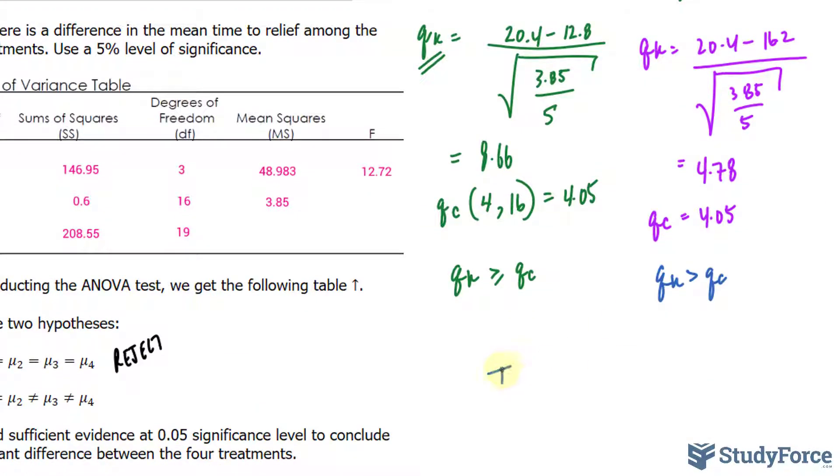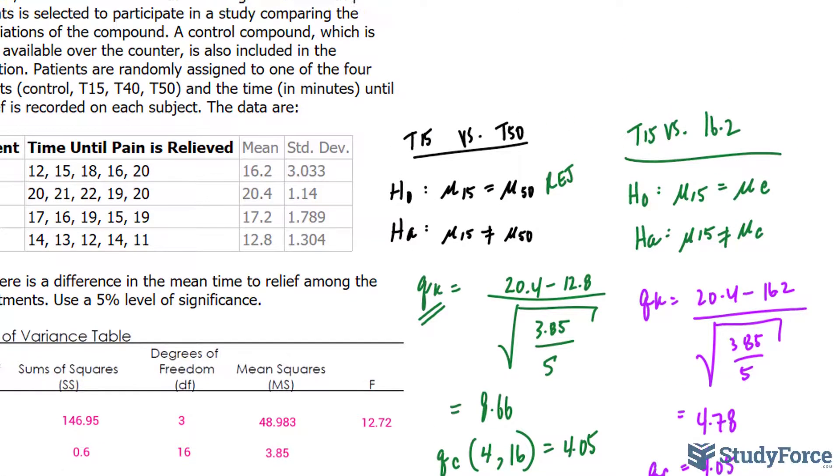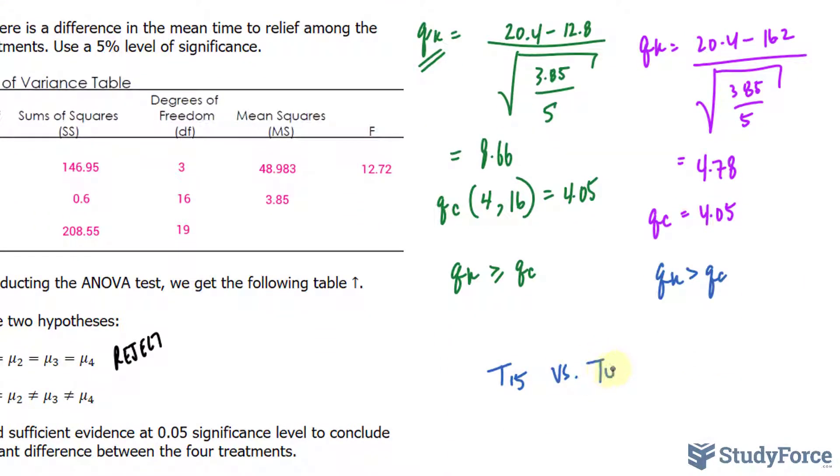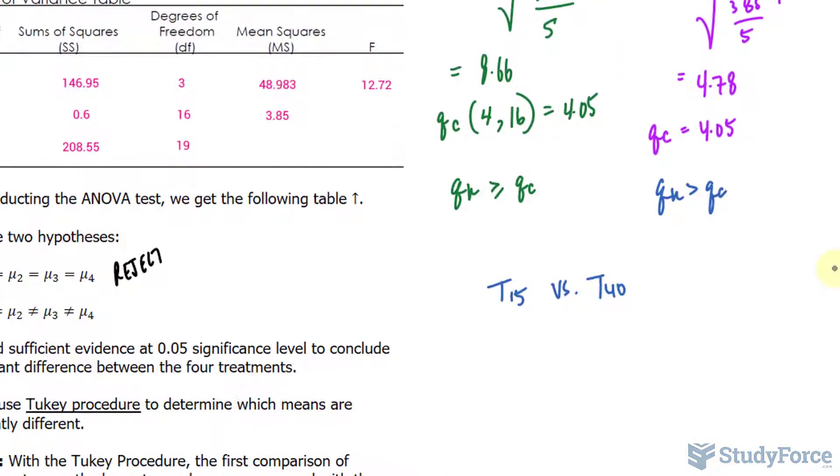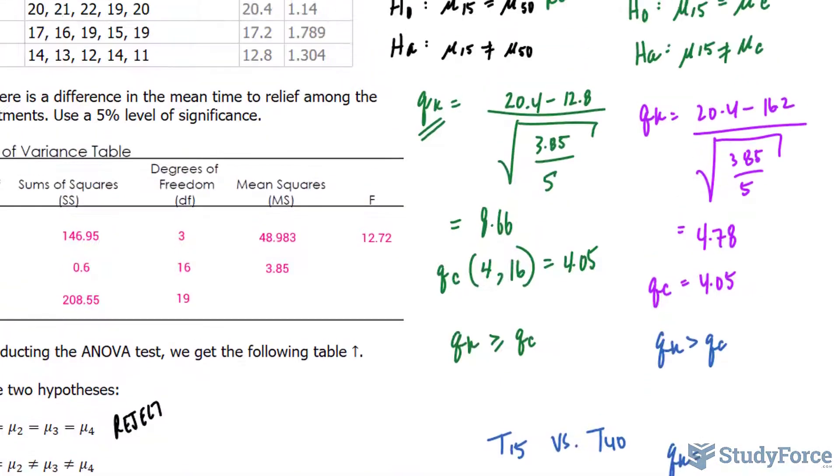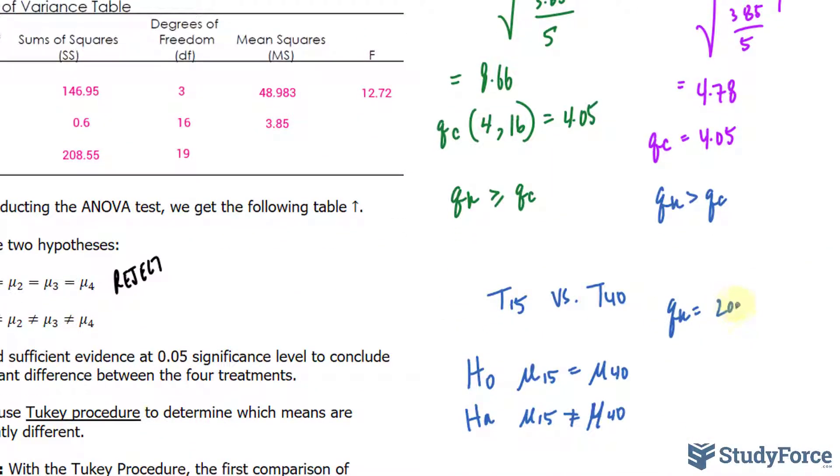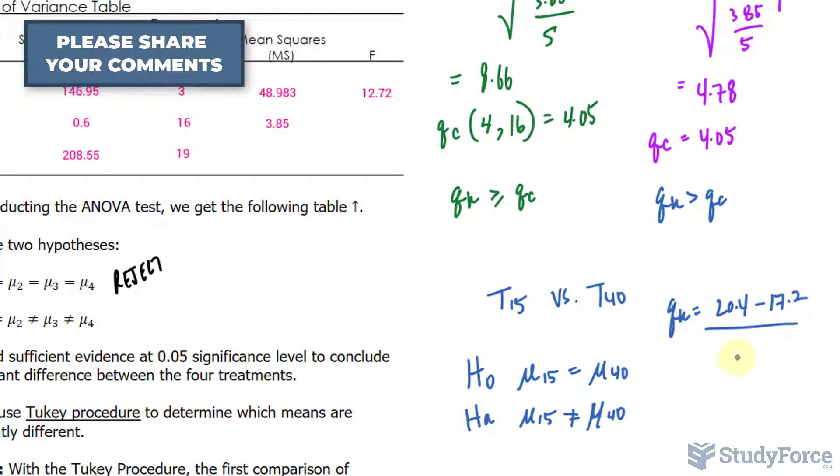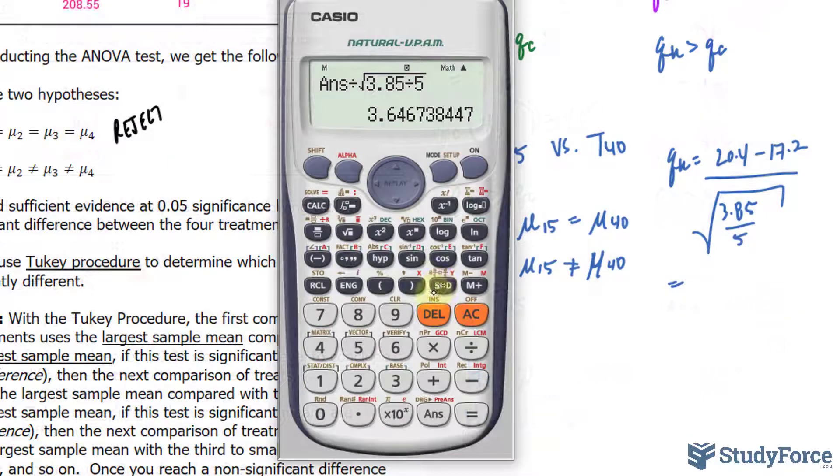Let me rewrite the null and alternative hypothesis. Now, we calculate Qₖ. We have 20.4 minus 17.2 over the same denominator as before. We end up with 3.64.